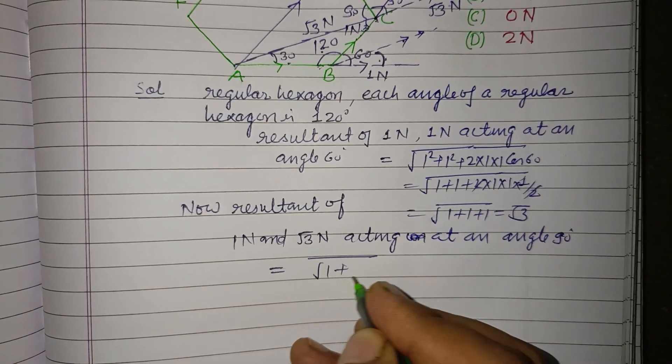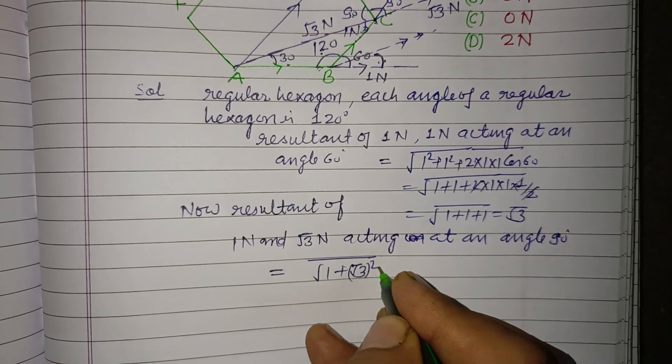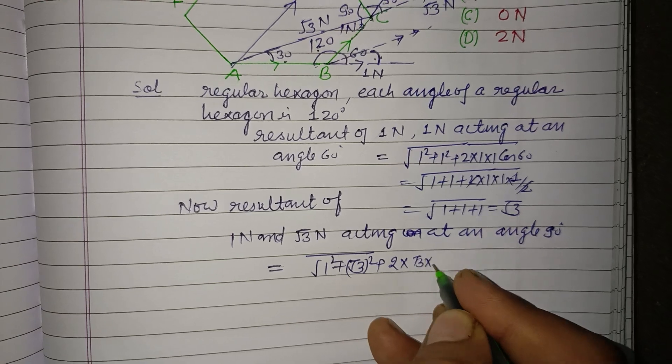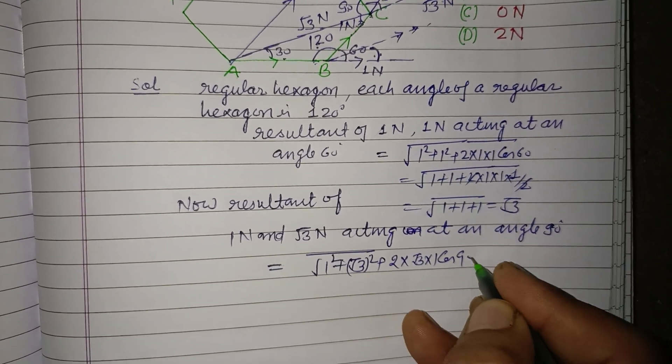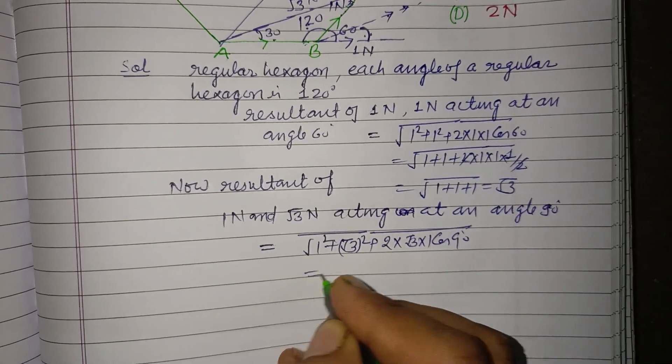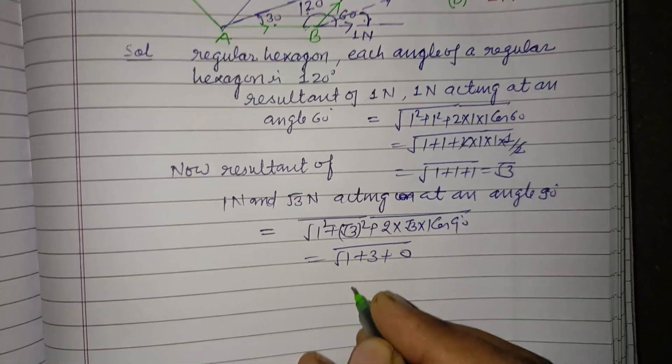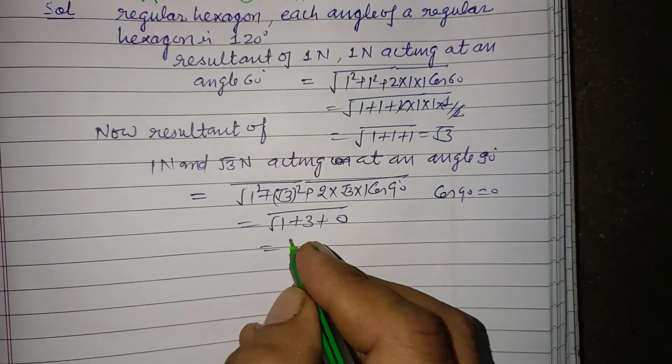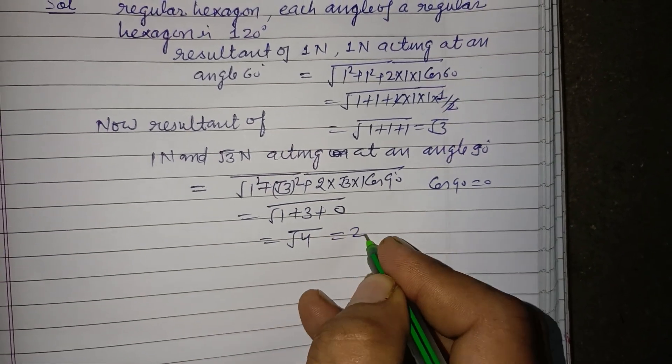So this is 1 square plus root 3 square plus 2 times root 3 into 1 into cos 90. And this is 1 plus 3 plus 0, cos 90 is 0. So this is 1 plus 0. So this is root 4 that is 2 N.